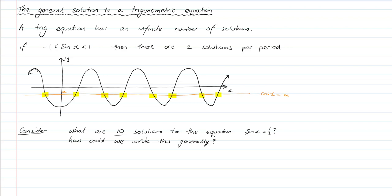A trig equation has an infinite number of solutions. For sin x between negative 1 and 1, there are two solutions per period, and I've got them highlighted here. You can see this trig equation just goes on and on, and those two solutions keep reoccurring.